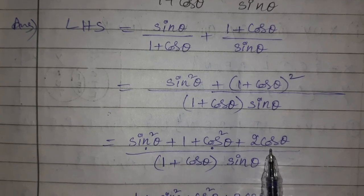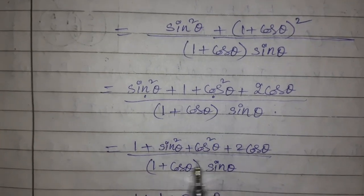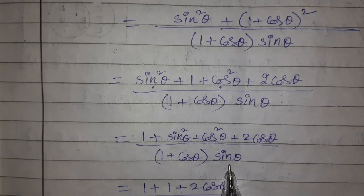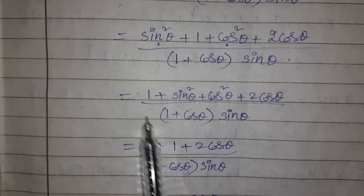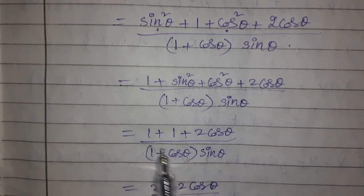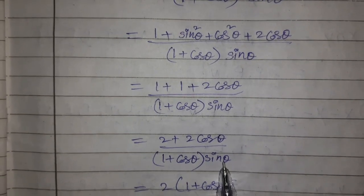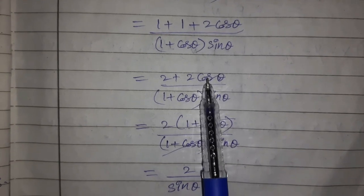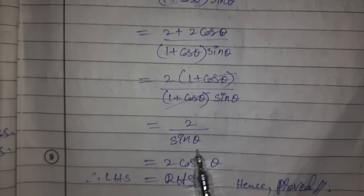Expanding (1 + cos θ)² using (A + B)² = A² + 2AB + B²: we get sin²θ + cos²θ + 2cos θ + 1. Since sin²θ + cos²θ = 1, this becomes 1 + 1 + 2cos θ = 2 + 2cos θ = 2(1 + cos θ). The denominator is sin θ(1 + cos θ), which cancels, giving 2/sin θ = 2 cosec θ = RHS.